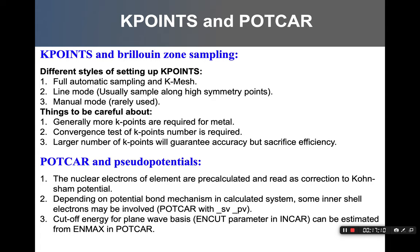As mentioned, DFT calculations in VASP use pseudopotentials to reduce the calculation amount. The pseudopotentials pre-calculate the electronic state of the inner shell electrons. There are different versions of the POTCAR depending on how you define the inner shell electrons, so there will be different versions of the pseudopotentials. You probably want to make a selection among the different pseudopotentials before running production calculations.